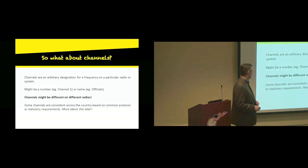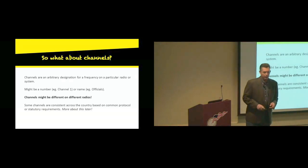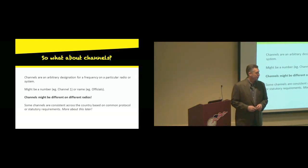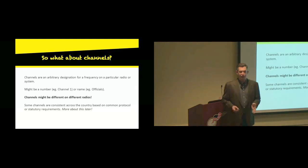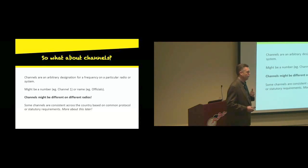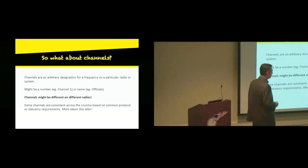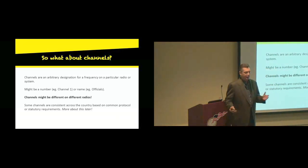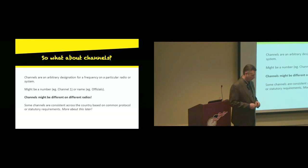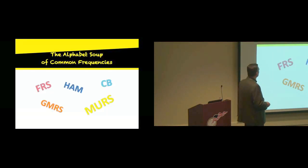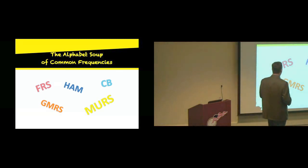Some are consistent around the country. For instance, FRS radios have channel one through fourteen — those are the same wherever you go. Channel two here is the same as channel two wherever you are. But if I go between two local associations, even if the radios are the same, the channels may be different. So let's look at some common frequencies out there.